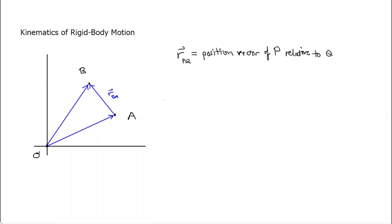We can write these vectors using our notational scheme: r sub BA — final point first, initial point second — r sub BO, and r sub AO. I'm using a cursive-looking O for origin just so it doesn't look like a zero.